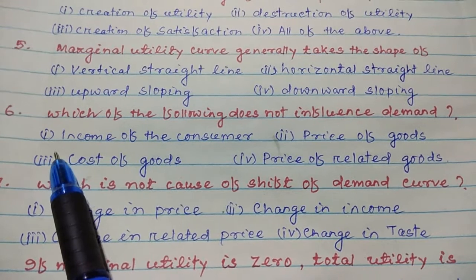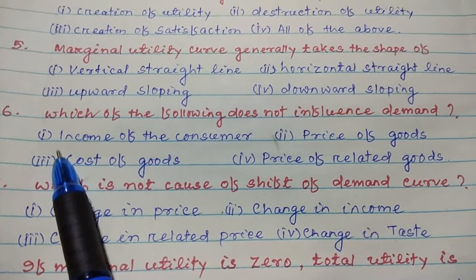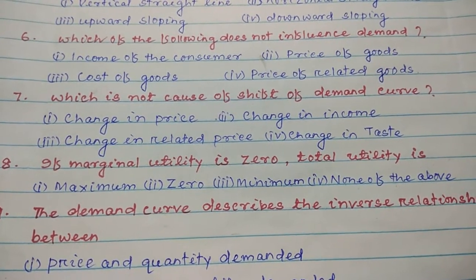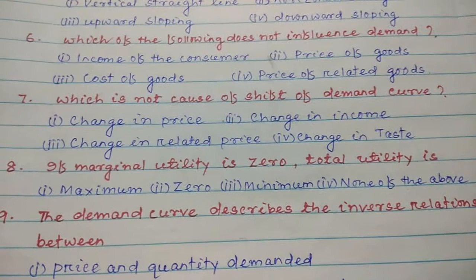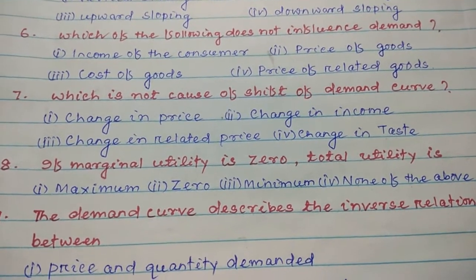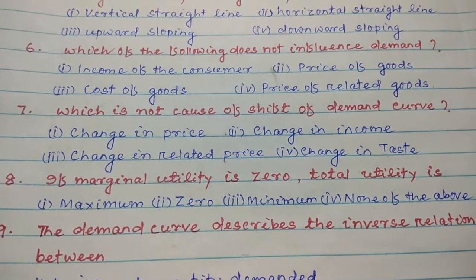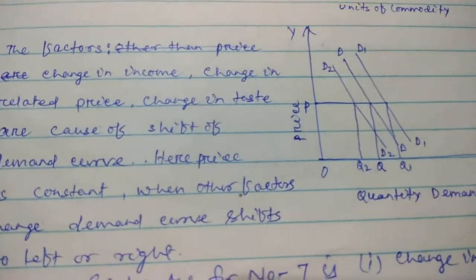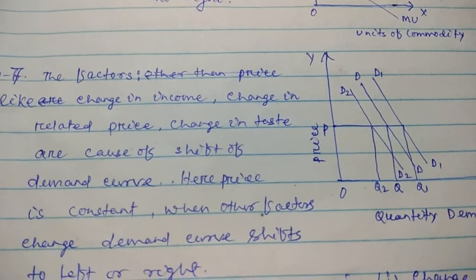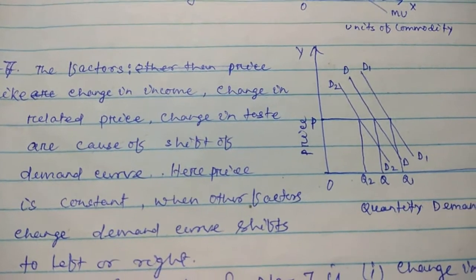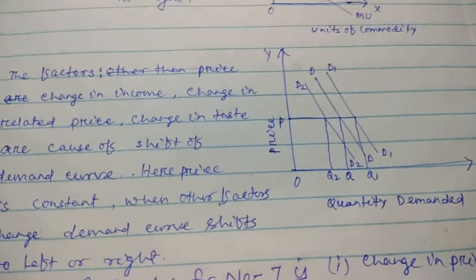Number seven: Which is not a cause of shift of the demand curve? I. Change in price, II. Change in income, III. Change in related price, IV. Change in taste. Factors like change in income, change in related price, and change in taste are causes of a shift of the demand curve. Here price is constant — when other factors change, the demand curve shifts to the left or right. So the answer for number seven is I. Change in price.